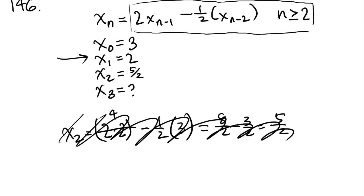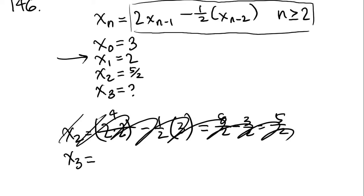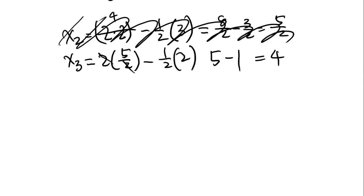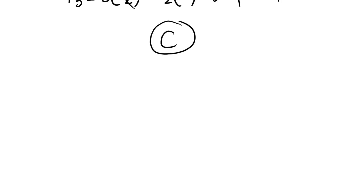x to the 3 is going to be, let's see, 2 times x to the n minus 1, in this case it's going to be 5 over 2, minus half of n minus 2, 3 minus 2 is 1, so x to the 1 is 2. Now we solve for x to the 3rd. Okay, these cancel out, and then we're left with 5 minus, 2 over 2 is going to be 1, so 5 minus 1, and that is 4. And 4 is answer C. Kind of a, not really a tough question, but one that requires a lot of work. Sort of a time sink question is what I like to call those.